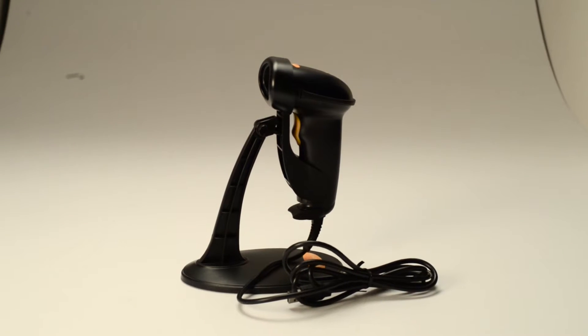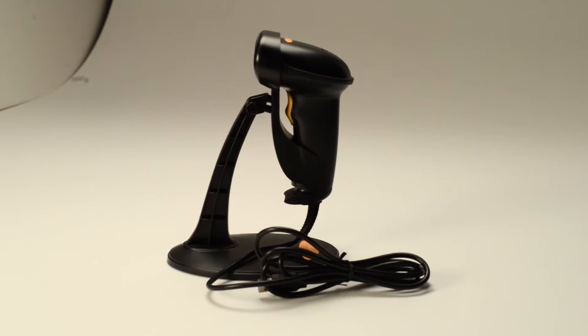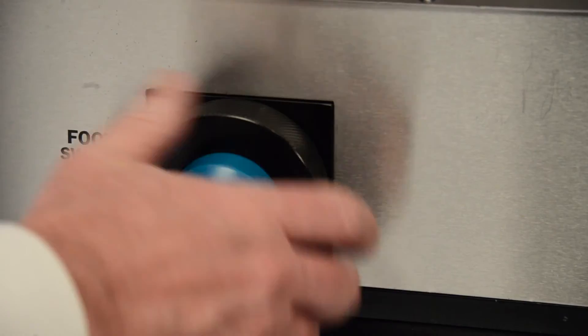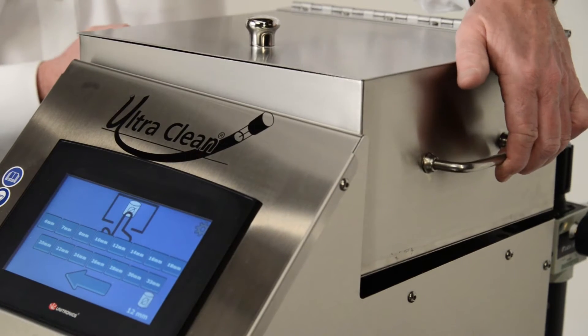For complete redundancy, an optional barcode scanner can be integrated into the system to ensure compatibility between system components such as the nozzle, projectile hopper, and projectile size.